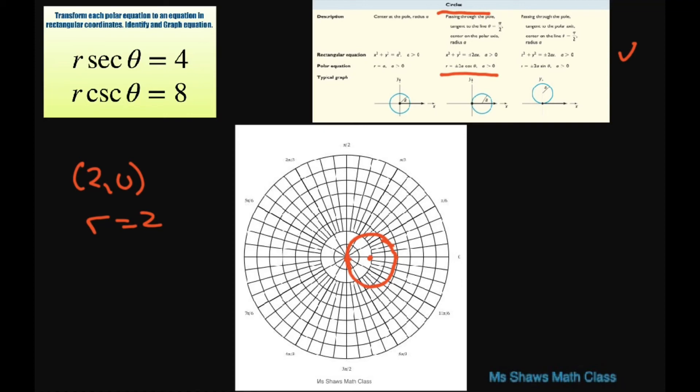Alright, for the cosine one it's tangent to this line—it means it touches it—and it's centered on the polar axis here.